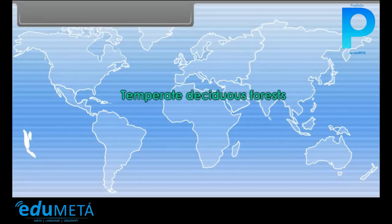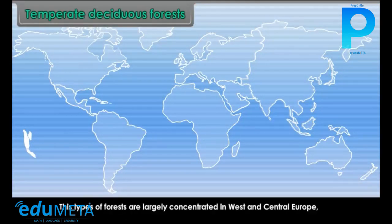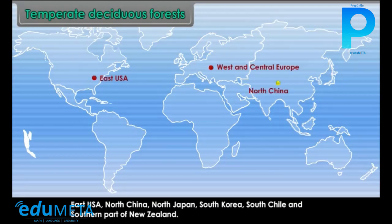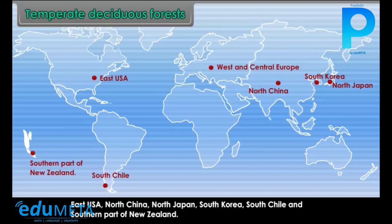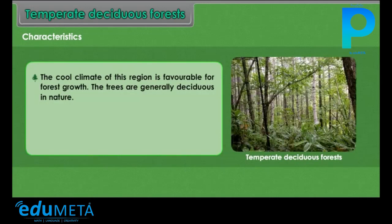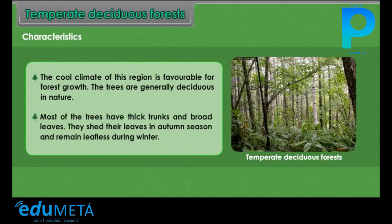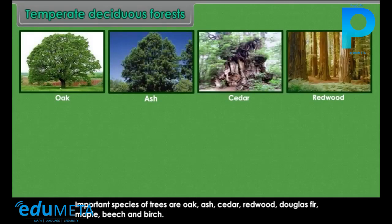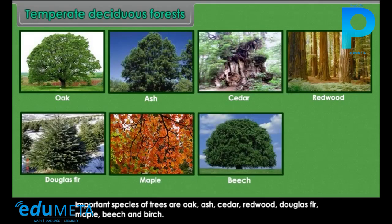Temperate Deciduous Forests are largely concentrated in West and Central Europe, East USA, North China, North Japan, South Korea, South Chile and the southern part of New Zealand. The cool climate of this region is favourable for forest growth. The trees are generally deciduous, with thick trunks and broad leaves. They shed their leaves in autumn and remain leafless during winter. Important species include oak, ash, cedar, redwood, douglas fir, maple, beech and birch.